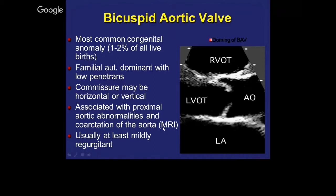This is very different from a functionally bicuspid valve. A congenitally bicuspid valve is very different. If you have a functional bicuspid valve, then you don't have all these other associated anomalies. It's really a tricuspid valve that's just got stuck. It's usually mildly regurgitant.